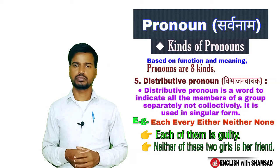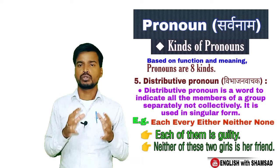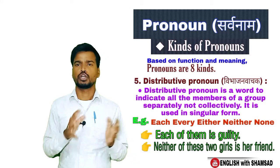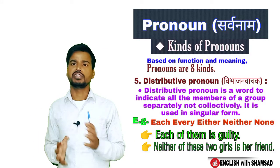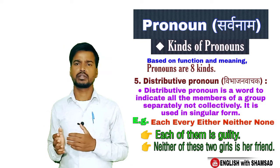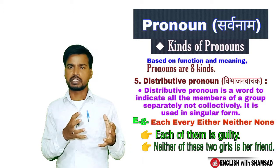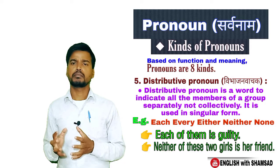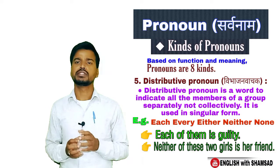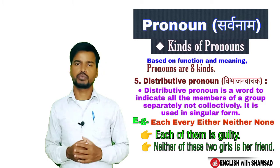The next kind of pronoun is distributive pronoun. Distributive pronoun is a word which refers to all members of a group separately, not collectively. It is used in singular form. For examples: each, every, either, neither. In a sentence: 'Each of them is guilty' — 'each' is a distributive pronoun. 'Neither of these two girls is her friend' — 'neither' is a distributive pronoun.